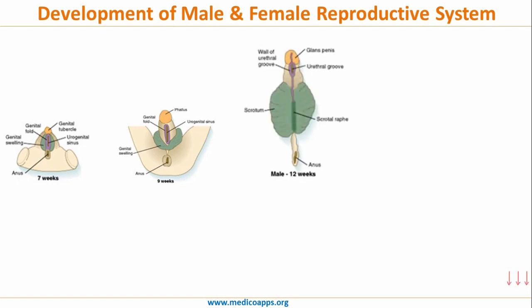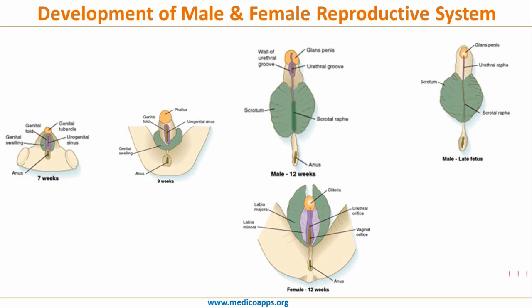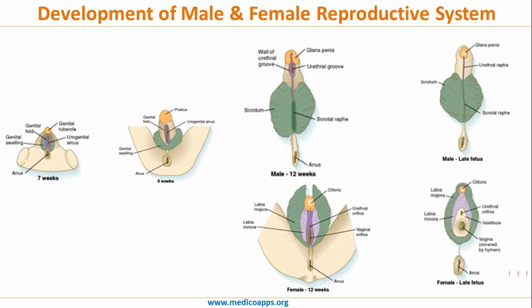If male hormones are present, by 12 weeks the genital swelling develops into the scrotum, the genital tubercle develops into the glans penis, and the genital folds develop into the ventral aspect of the penile urethra and penis. This development continues till late fetus. However, if male hormones are not present, the genital swelling develops into labia majora, the genital tubercle develops into the clitoris, and the genital fold develops into labia minora. This development of the female external genitalia continues till late fetus.